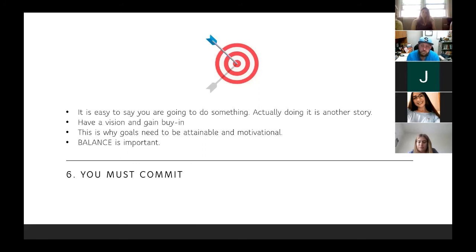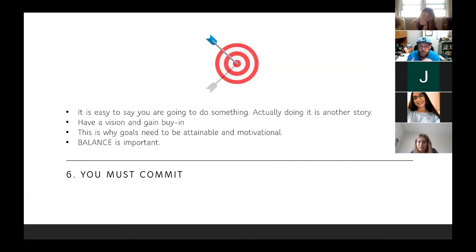Balance is also important. If you have an organizational goal and you turn into dictator mode — getting mad when things go off the rails and people aren't buying in — it's not going to help. Getting angry and being overly strict about everything isn't the answer. It's important sometimes to take a step back, refocus, and reset that vision with the group to regain buy-in. Balance is important.